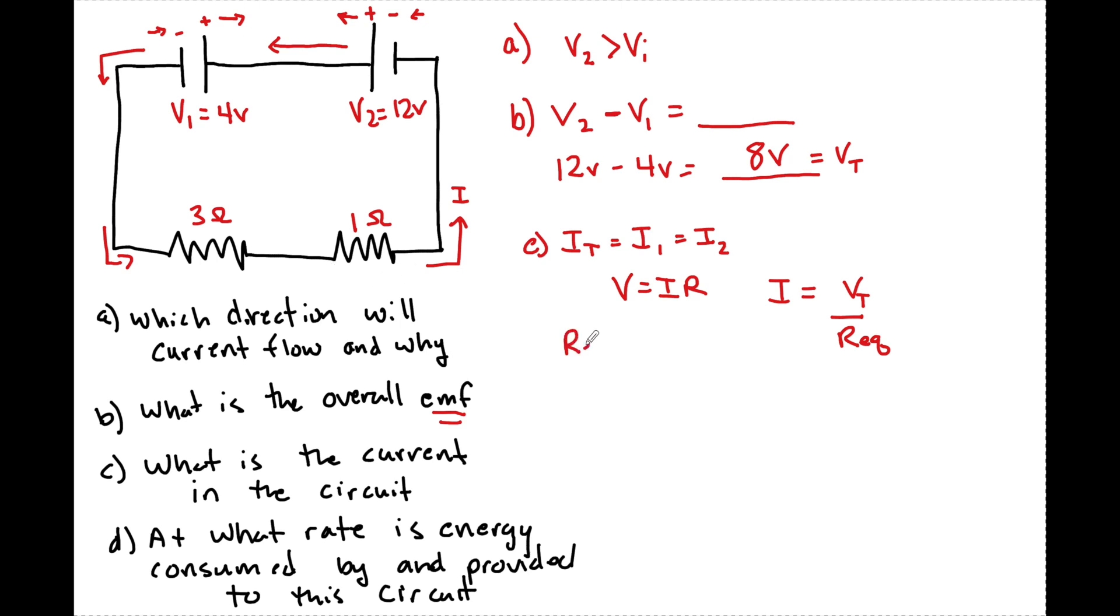And in series, REQ is just equal to R1 plus R2. This is a rule. So we have 3 ohms plus 1 ohm is going to be a total of 4 ohms. So when I solve for I now, I have 8 volts divided by 4 ohms. The current of this circuit is going to be 2 amperes, 2 amps.